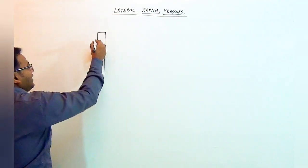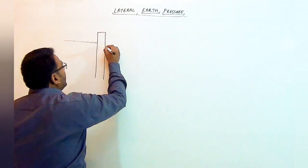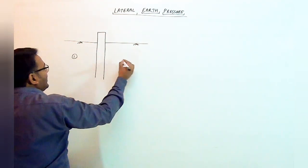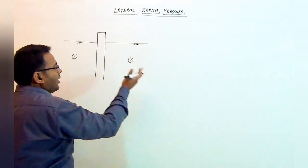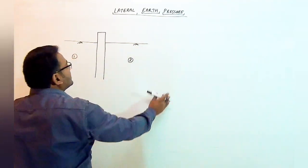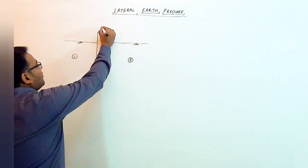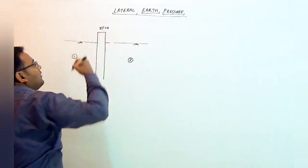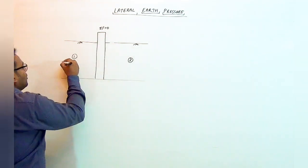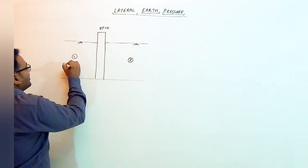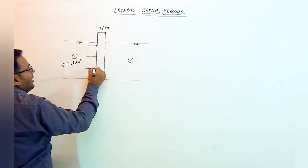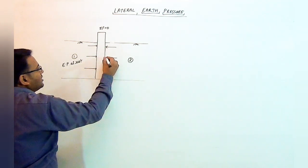Let us take a retaining wall which is surrounded by soil on its both sides — soil 1 and soil 2. As the density and gamma of both the soils are equal and the height of these backfills is the same on both sides, we can say that the net force on this particular retaining structure will be equal to zero. As the net force is zero, both soils are exerting an earth pressure at rest, directed away from the backfill.